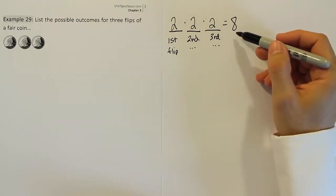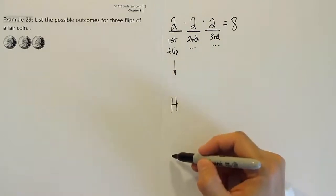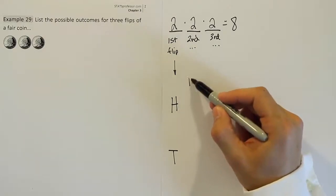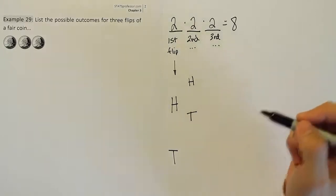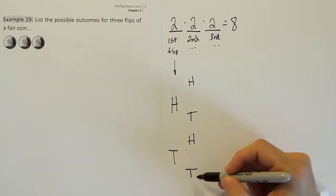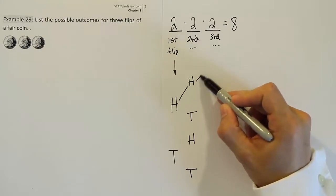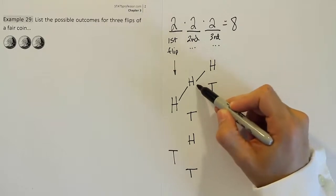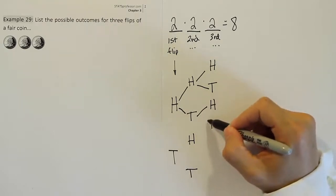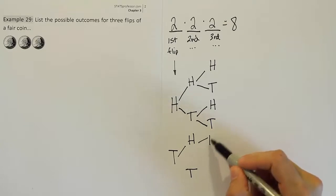Now that we have that, the next step is to list the outcomes. The first flip can either turn out to be heads or tails. On the second flip, if the first flip was heads, the second flip could be heads or tails. If the first flip had been tails, the second flip could still be either heads or tails. Then for the third flip: if the first was heads and second was heads, the third could be heads or tails. If the first was heads and second was tails, the third could still be heads or tails. If the first was tails and the second was heads, the third could still be heads or tails.